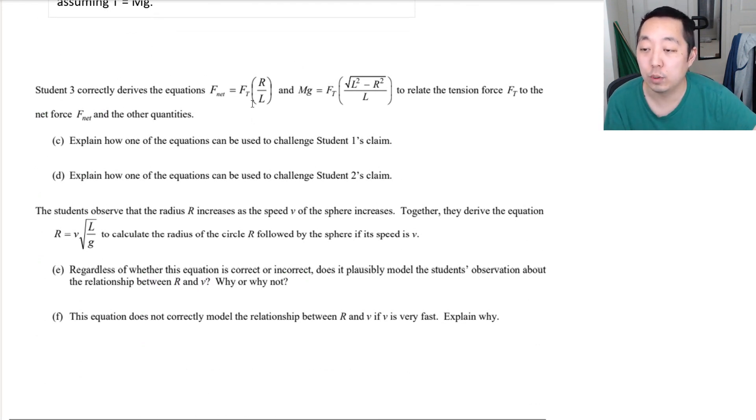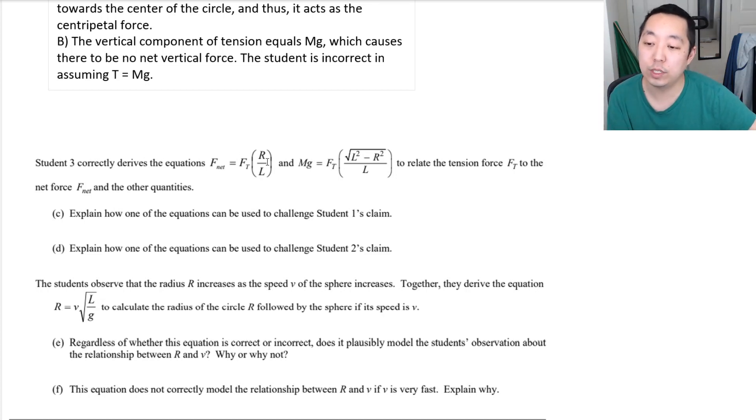So, what is he wrong about? The student is incorrect in assuming T equals mg. What is he specifically wrong about? He's saying that the tension is equal to mg. The tension is not equal to mg. The vertical component of tension equals mg. So, student 3 correctly derives the equations F net equals Ft R over L. Mg equals Ft, to relate the tension force to the net force of the other quantities. Explain how one of the equations can be used to challenge student 1's claim.